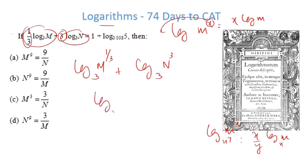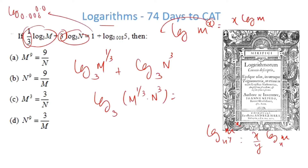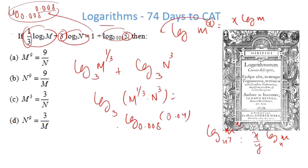That product is given as 1. Now, 1 can be written as log base 0.008 of 0.008. Then log m + log n is log(m × n), so this becomes log base 0.008 of (0.008 × 5), which equals log base 0.008 of 0.04.